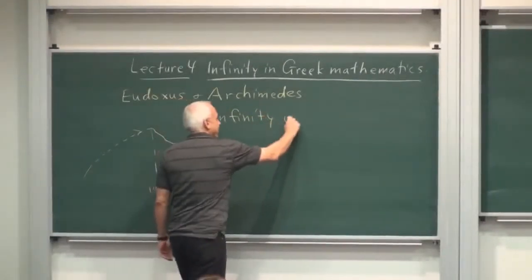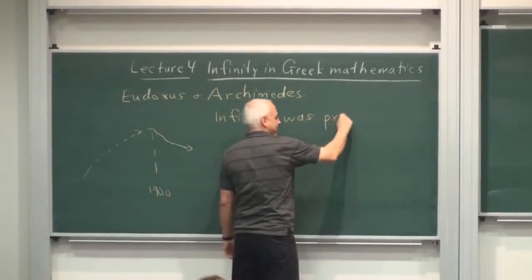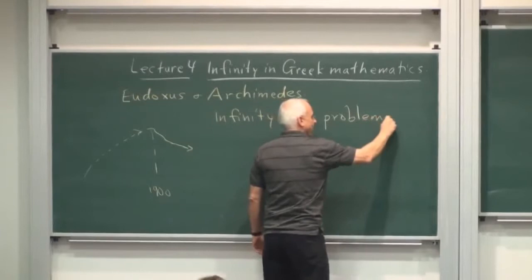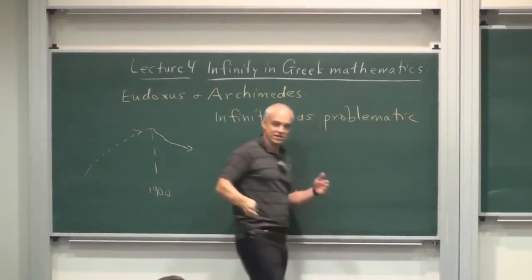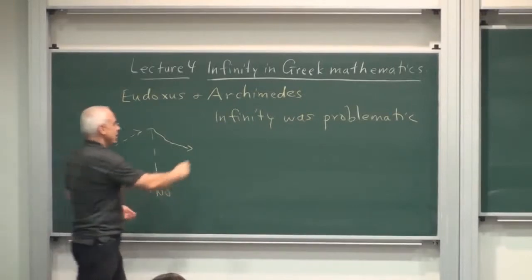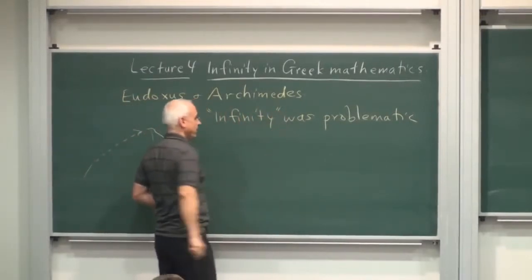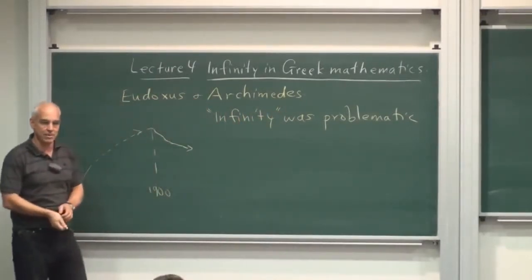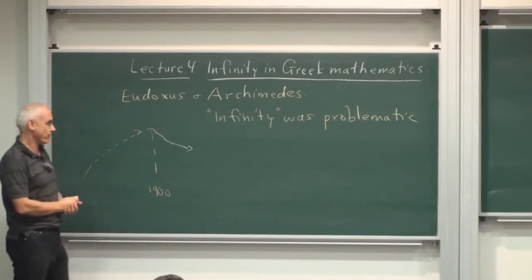So to the ancient Greeks, infinity was problematic. It was almost like a religious or philosophical notion, and its role in mathematics was unclear. So infinity to the ancient Greeks was something that one should think of in quotes.